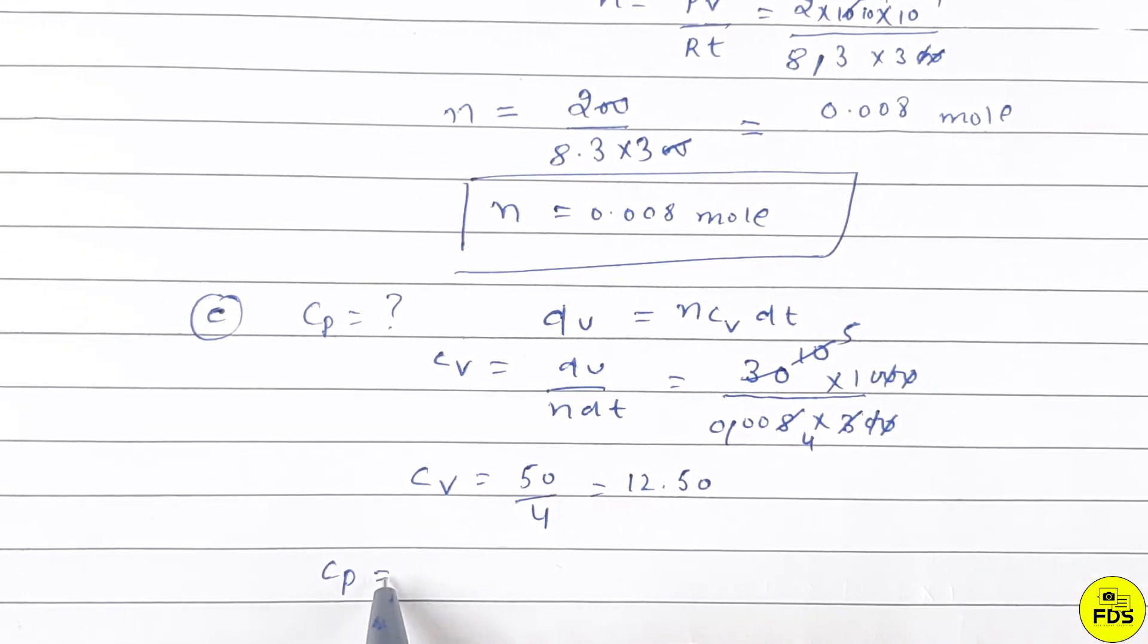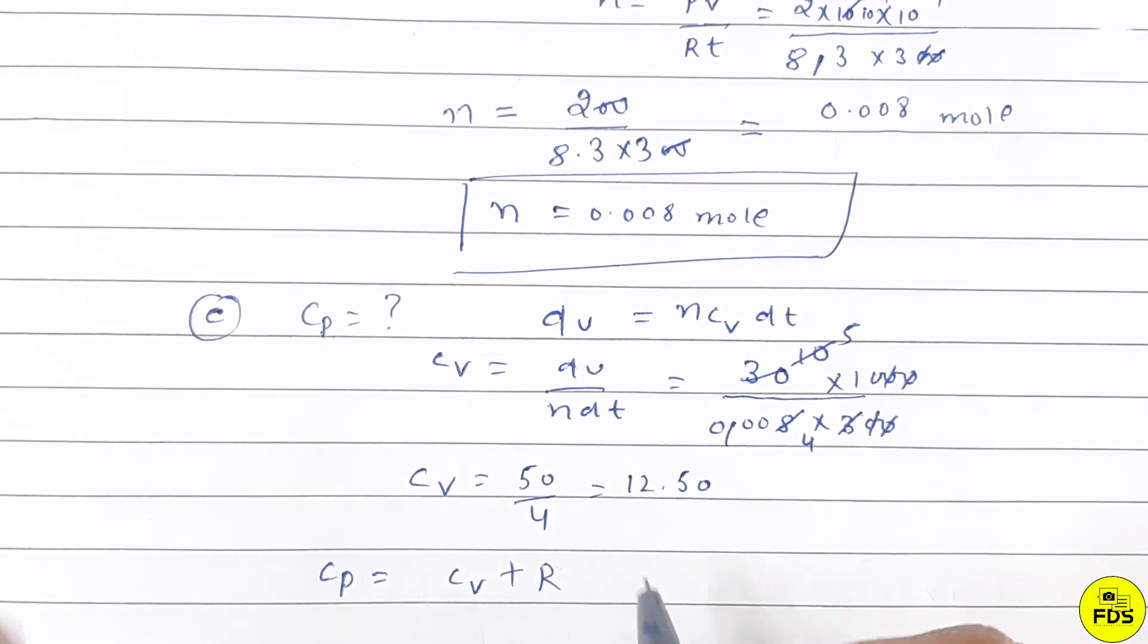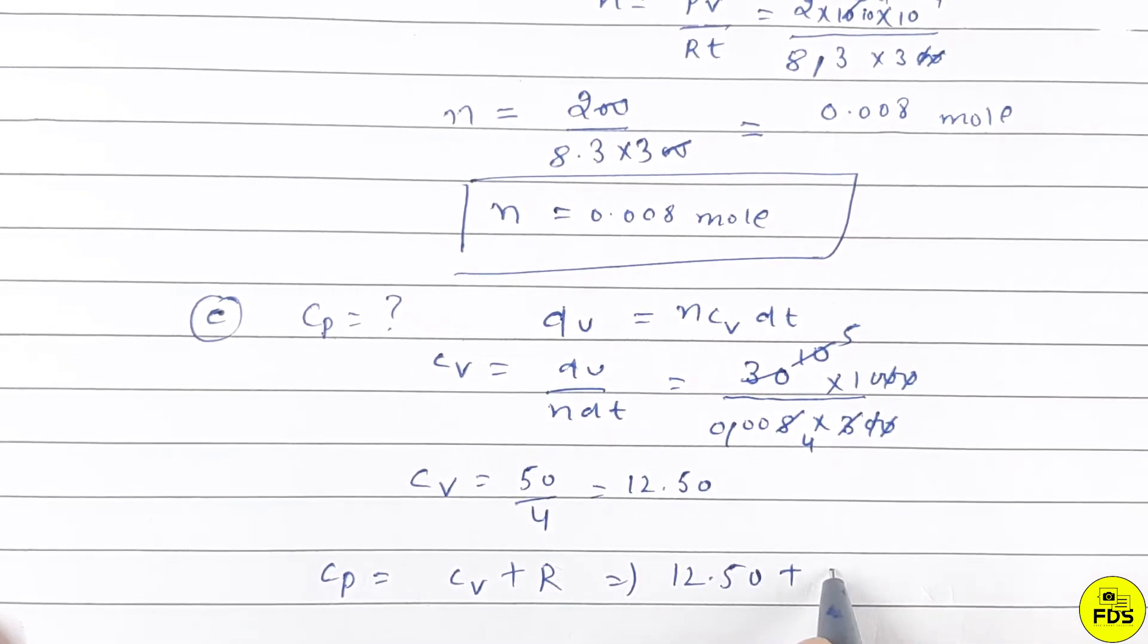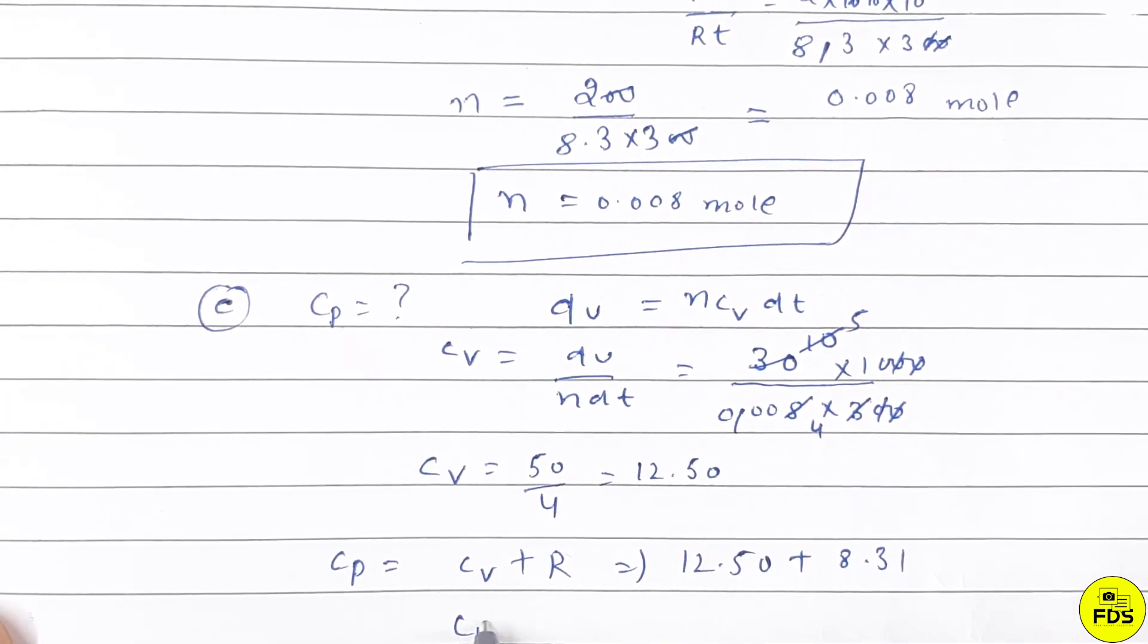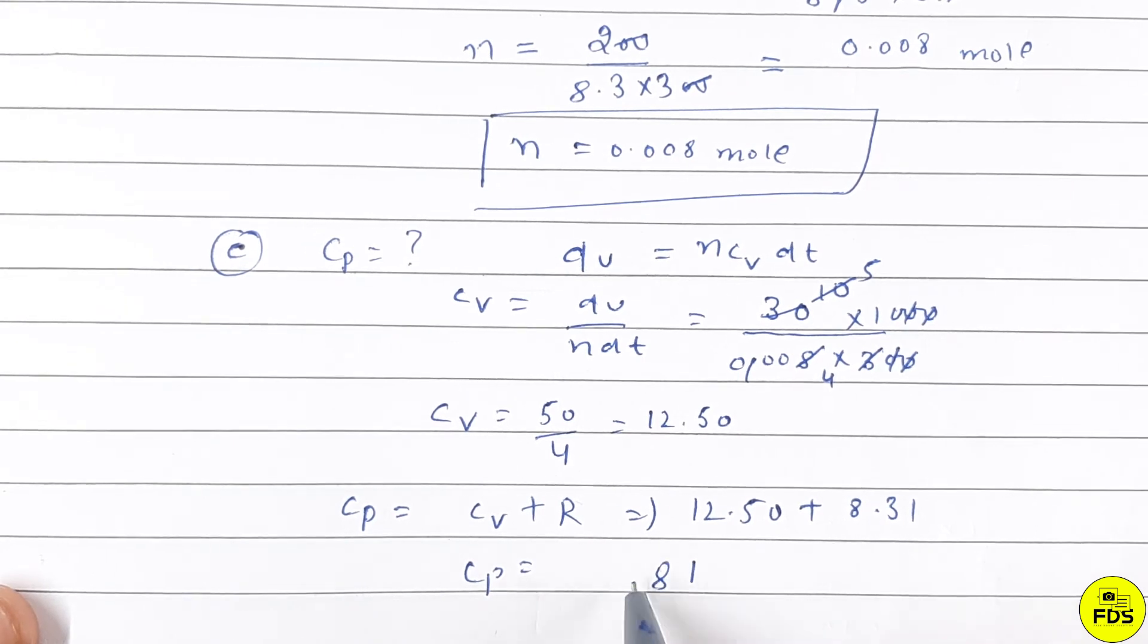CP equals CV plus R, so CP minus CV equals R. CV is 12.50 plus 8.31, so CP is 20.81 Joule Kelvin inverse mole inverse.